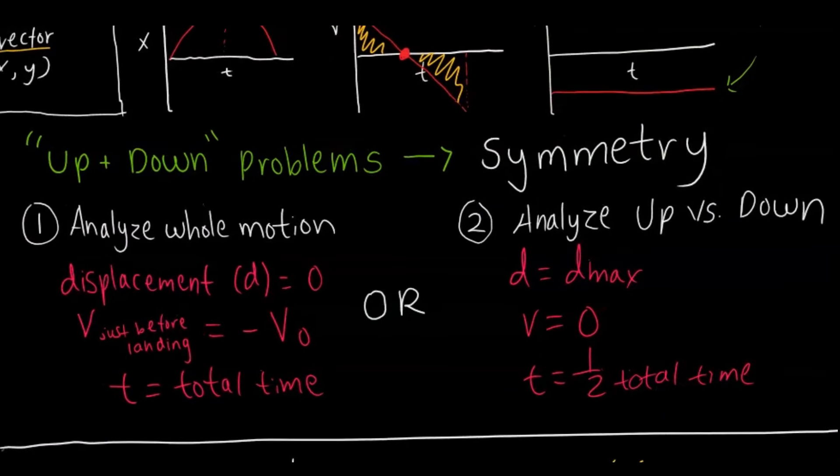The other thing regarding free fall is up-and-down problems, and we already talked about the symmetry you're going to see. There are two strategies when analyzing these problems. You can analyze the whole motion — where displacement is zero because it came back down, the velocity just before landing is the negative of the initial velocity, and time is the total time for the entire motion. Or you can analyze just the up portion or just the down portion, where displacement is maximum, velocity is zero at the apex, and time is half the total time.